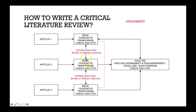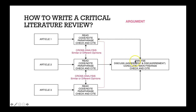You look at what each article is saying, what the similarities and differences are between them. You can also criticize the articles' methodology, their limitations, and how relevant their findings are. You then perform three cross-analyses: between articles one and two, between articles two and three, and between articles one and three — labeled A, B, and C. Finally, you give an overall analysis of all three articles, discuss the agreements or disagreements, conclude the main finding, and cite accordingly.